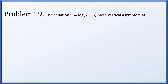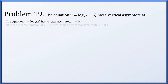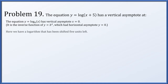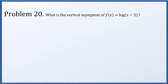For problem 19, the equation y equals log of (x plus 5) has a vertical asymptote where? In general, y equals log base b of x has a vertical asymptote at x equals 0. However, this function has been shifted 5 units to the left — we have log of (x plus 5), not just log x — so the vertical asymptote is at x equals negative 5. Problem 20: the vertical asymptote of f(x) equals log of (x minus 5). This is a logarithm shifted 5 units to the right, so the vertical asymptote is at x equals 5.